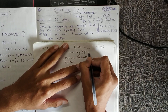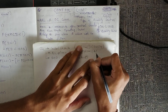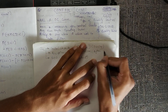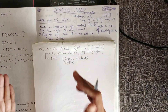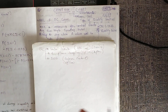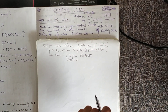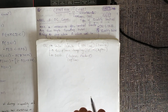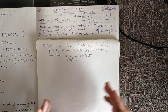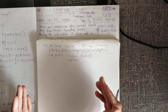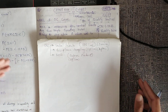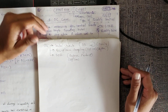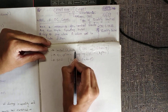Acceptance sampling is also offline but it is after production. It is not a quality control method as such — we are just trying to limit the bad products going out of our plant so that only good quality products reach the customers.